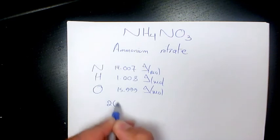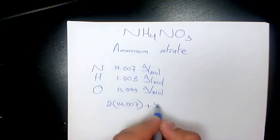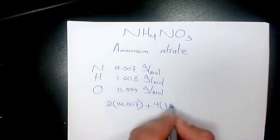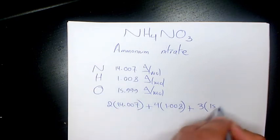So 2 times 14.007 plus we have 4 hydrogen, 4 times 1.008 plus 3 times oxygen, 15.999.